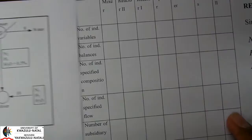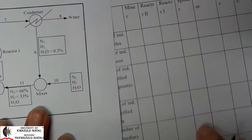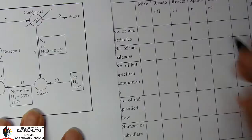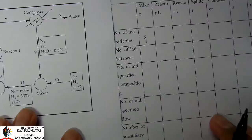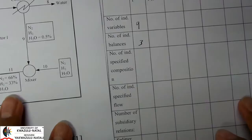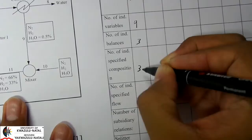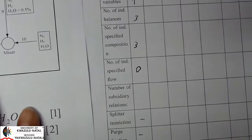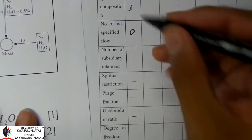For our mixer: the number of stream variables is 9. In terms of balances, there is a maximum of 3 different components, so 3 balances. In terms of specified compositions, there are 3 specified. No specified flow at this point, and no applicable subsidiary relations. Calculating the degree of freedom: 9 minus 3 minus 3 equals 3.